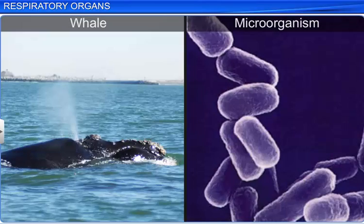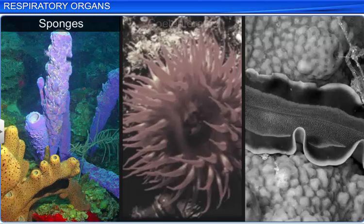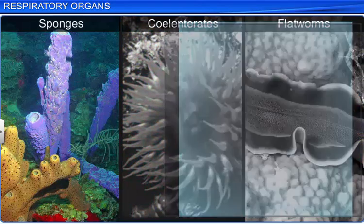However, the mechanism of breathing varies depending on the habitat and level of organization of an animal. Lower invertebrates such as sponges, coelenterates, and flatworms exchange gases by simple diffusion through their body surface.